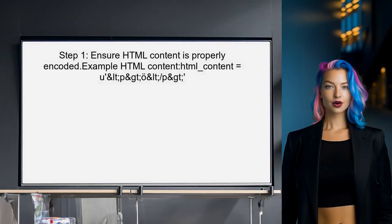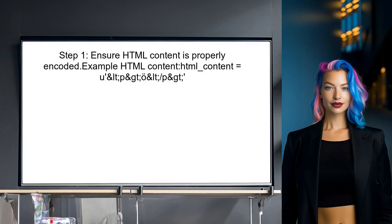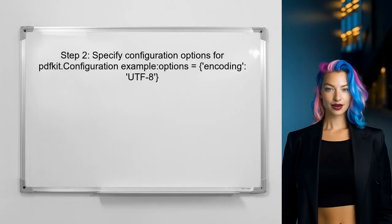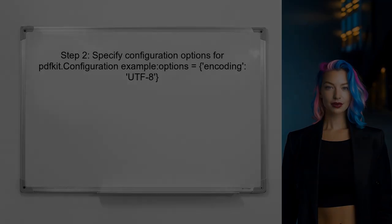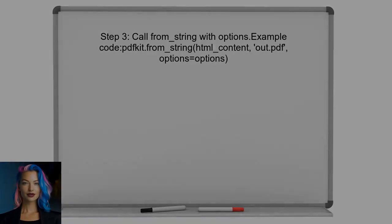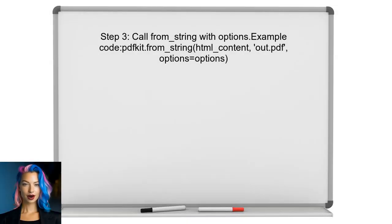To generate a PDF with non-ASCII characters, the user should first ensure that the HTML content is properly encoded — this means using Unicode for the non-ASCII characters. Next, specify the configuration options for PDFKit, including setting the encoding to UTF-8, which is essential for handling non-ASCII characters. Then call the from_string method with the HTML content and the output file name, while including the options for encoding.